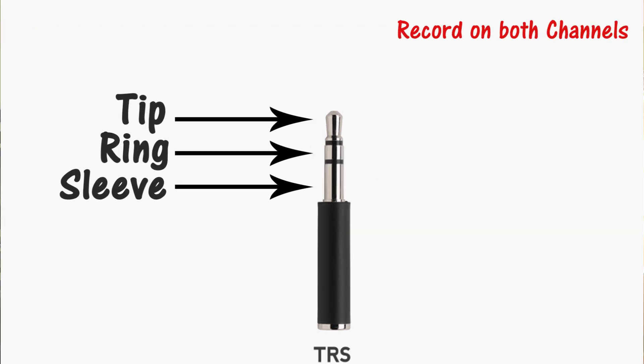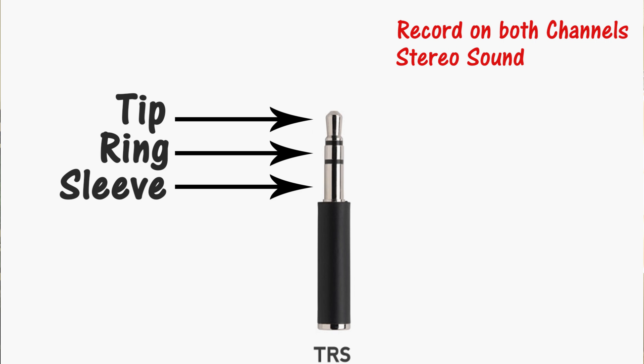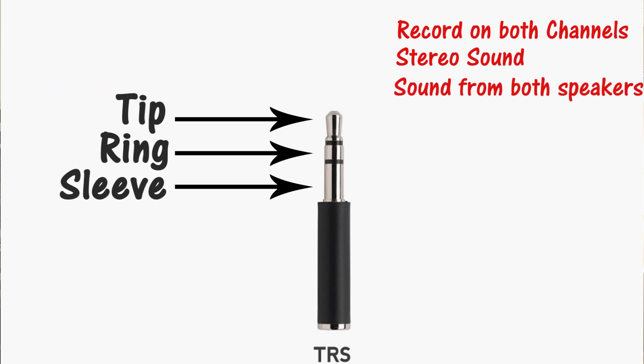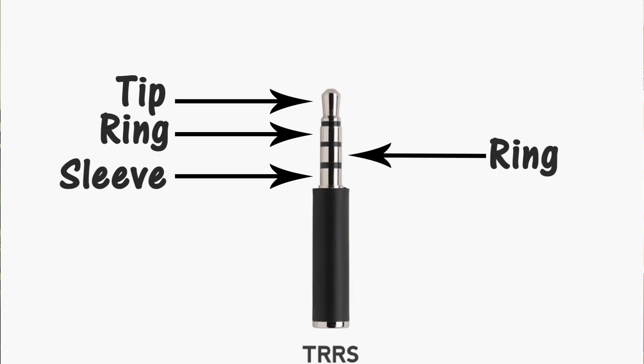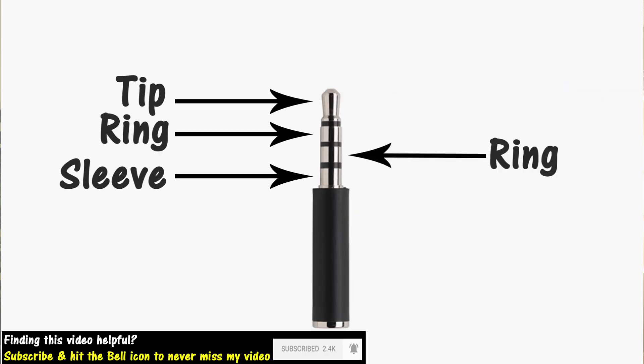On the other hand, TRS cables record on two channels, which means the sound is actually stereo. They can be used on cameras, audio recorders, or on any device that has a microphone port.